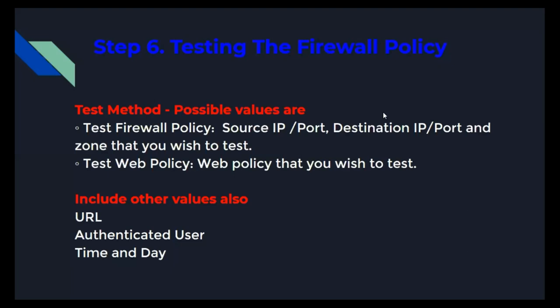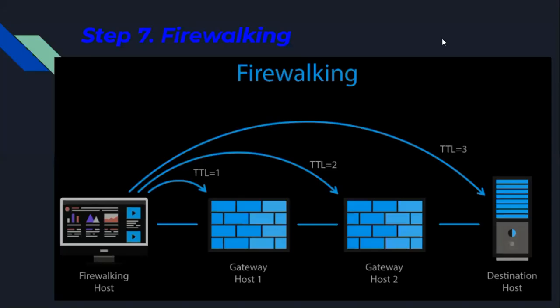Step six is testing the firewall policy. There are two methods: testing by firewall rule parameters such as source IP, source port, destination IP, and destination port; and testing by zone. You can also test web filter policy including particular URLs, authenticated users, specific times, or specific days.